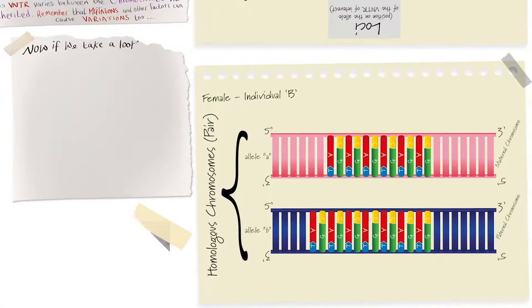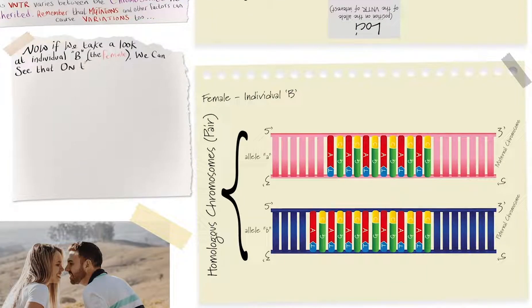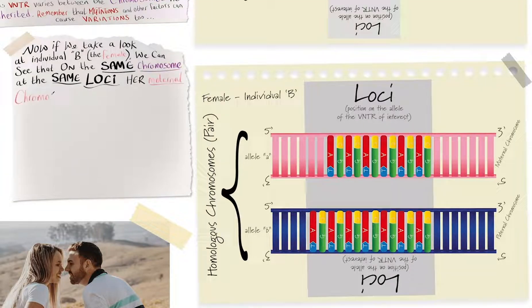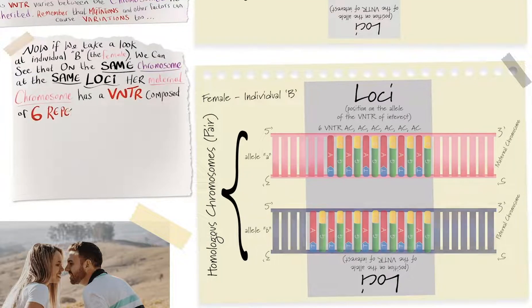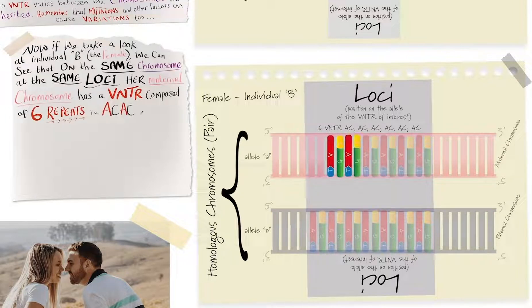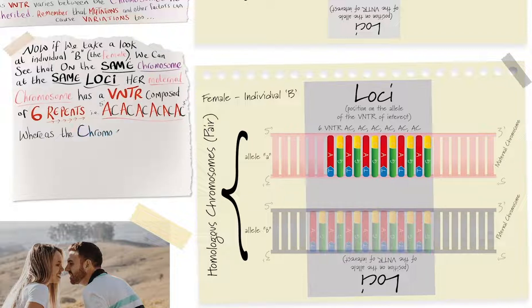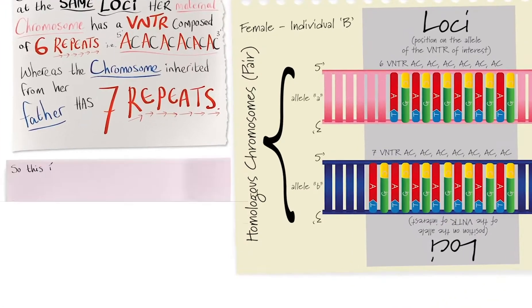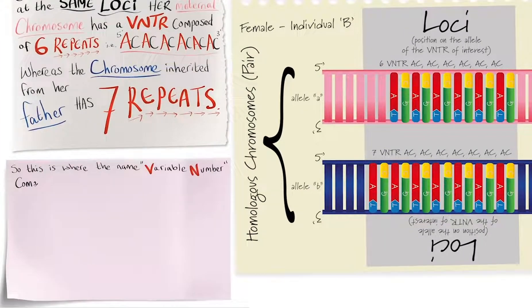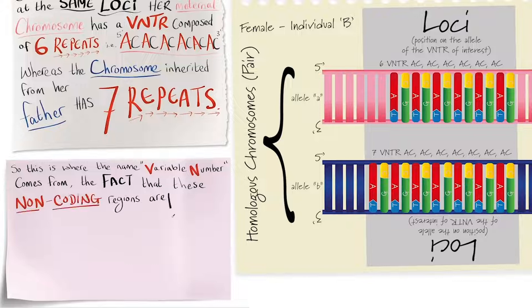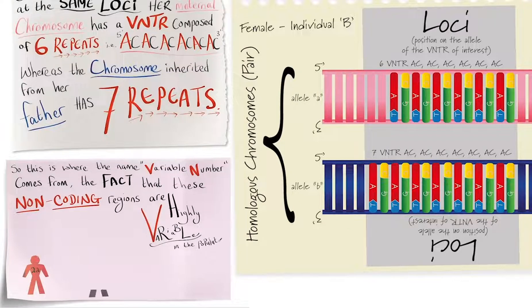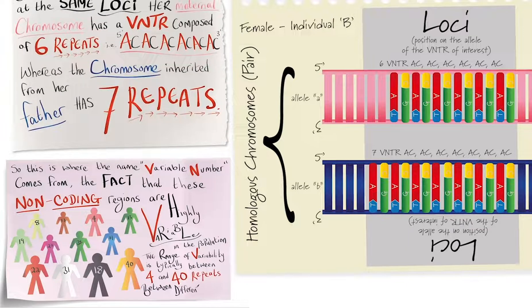Now, if we take a look at individual B, the female, we can see that on the same chromosome, at the same loci, her maternal chromosome has a VNTR composed of 6 repeats. We have AC, AC, AC, AC, AC, and AC. Whereas the chromosome inherited from her father has 7 repeats. So this is where the name variable number comes from. The fact that these non-coding regions are highly variable in the population. The range of variability is typically between 4 and 40 repeats between different individuals.